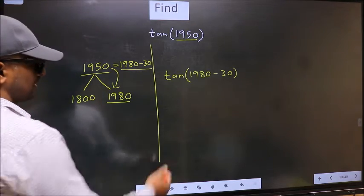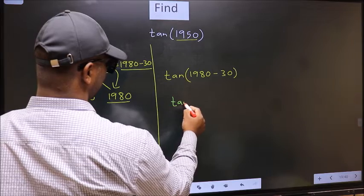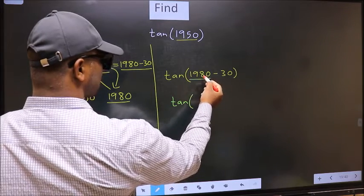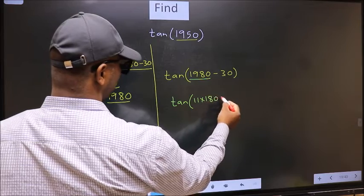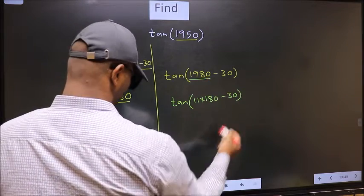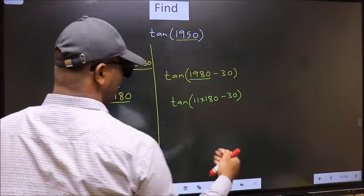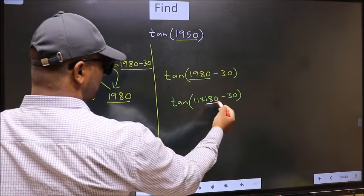Next, tan. In place of this, now we should write 11×180 minus 30. Here we have 180.